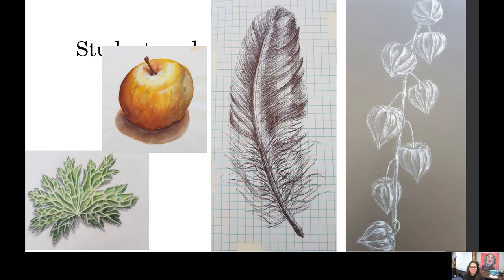These are some examples of student work. You can see these were homeworks set for the still life project — a watercolour apple looking at how to use watercolour, a coloured pencil leaf looking at shadow, highlight and form, and a biro feather. Often we don't draw in biro — it's quite bold because you can't rub it out. We also think about working the other way, using a black piece of paper and drawing the highlights in white pencil rather than the shadows.